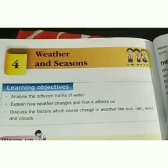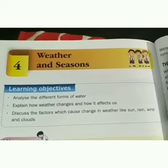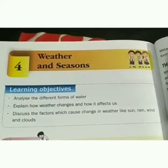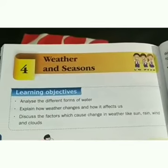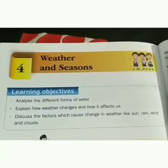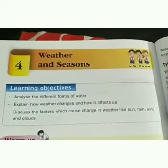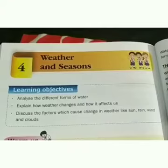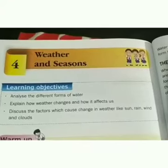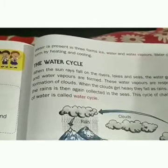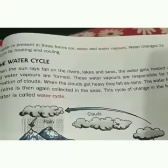Today we will start Science Chapter 4: Weather and Seasons. First of all, we have to know about the different forms of water. As given in your book, water is present in three forms: ice, water, and water vapor.